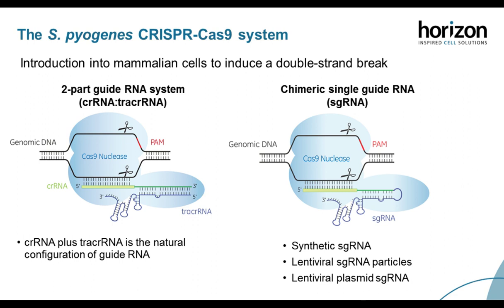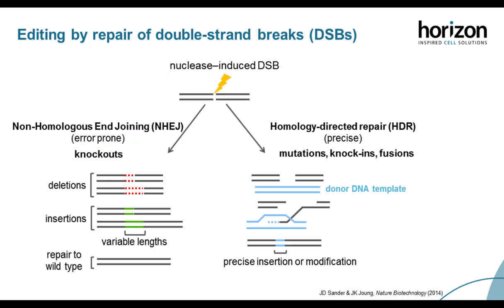CRISPR-Cas9 was adapted for use in mammalian genome editing by introducing the bacterial system into mammalian cells. The native S. pyogenes system consists of a Cas9 protein and two RNAs: the CRISPR-RNA and tracer RNA. Alternatively, you can use a chimeric single guide RNA, or sgRNA, where the CRISPR-RNA and tracer RNA are linked into a single molecule. When the system is delivered or expressed in mammalian cells, it can cause a double-strand break.